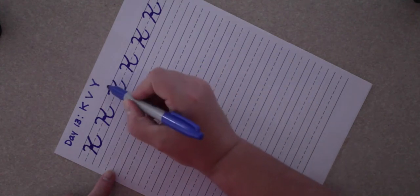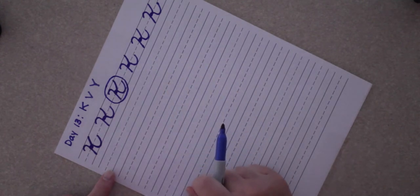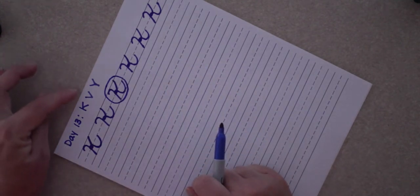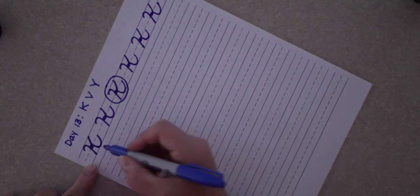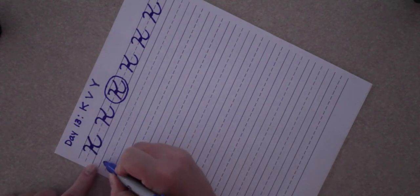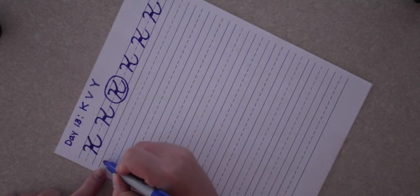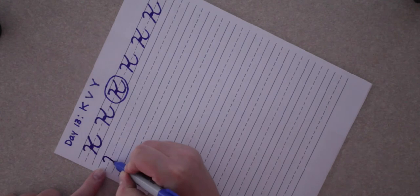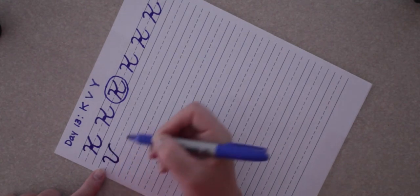Go back and find which one you think is your best and circle it. Let's get ready to make capital V now. Capital V starts just like the capital K, just a little bit below the top line.